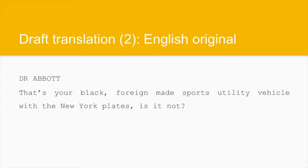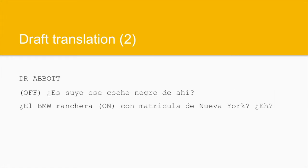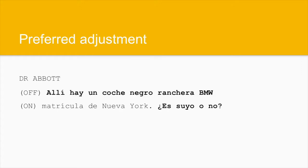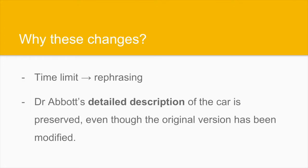On this occasion, we have a long description of a car that the viewer can easily glimpse at during the scene. The degree of detail and punctiliousness say quite a lot about the character, Dr. Rabbit. He says, 'That's your black foreign-made sports utility vehicle with the New York plates, is it not?' This is quite a stilted statement. In our draft, we say: ¿Es suyo ese coche negro de ahí? ¿El BMW ranchera con matrícula de Nueva York? ¿Eh? We add this at the end just to make it exactly like the original. But in the end, we realize that something like this sounds much better: Allí hay un coche negro ranchera BMW con matrícula de Nueva York. ¿Es suyo o no? Time limits must be respected, otherwise the illusion of synchrony is broken. Our final version is far from literal, but the licenses we've taken, in our view, keep the gist and guide the viewer through the intertextuality of the scene.